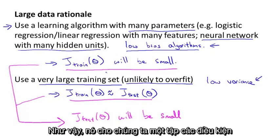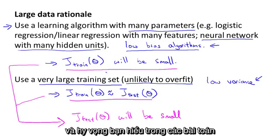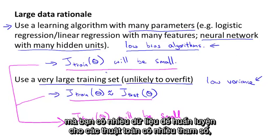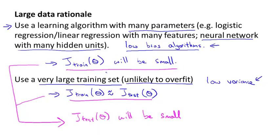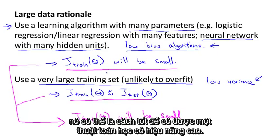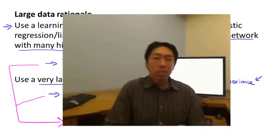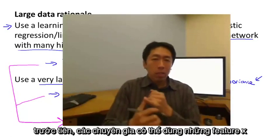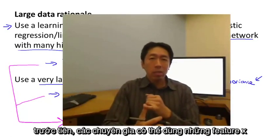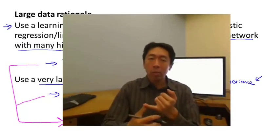So this gives us a set of conditions, or hopefully some understanding of what's the sort of problem where if you have a lot of data and you train a learning algorithm with a lot of parameters, that might be a good way to give a high performance learning algorithm. And really I think the key test that I often ask myself are: first, can a human expert look at the features x and confidently predict the value of y?